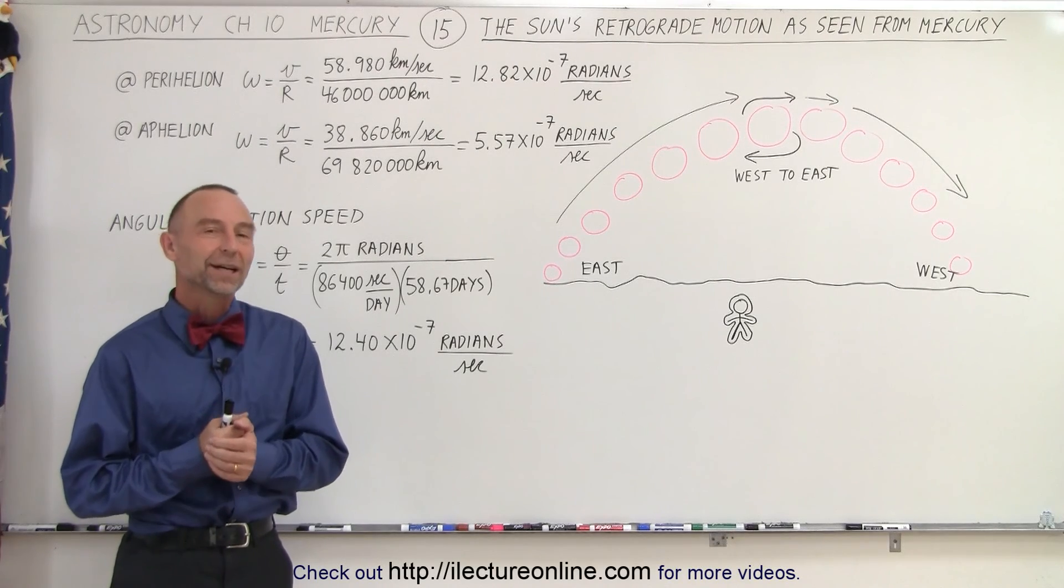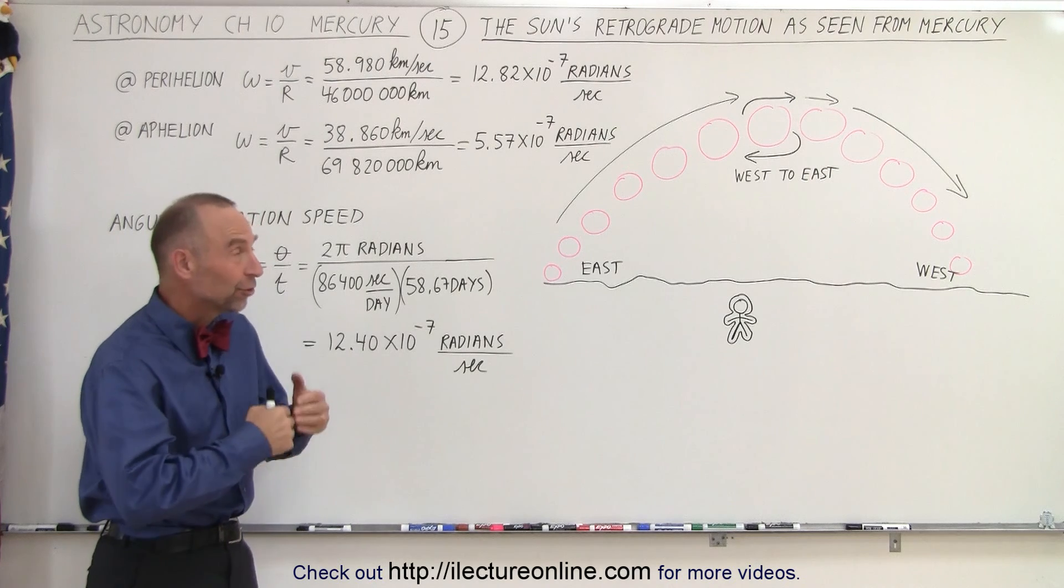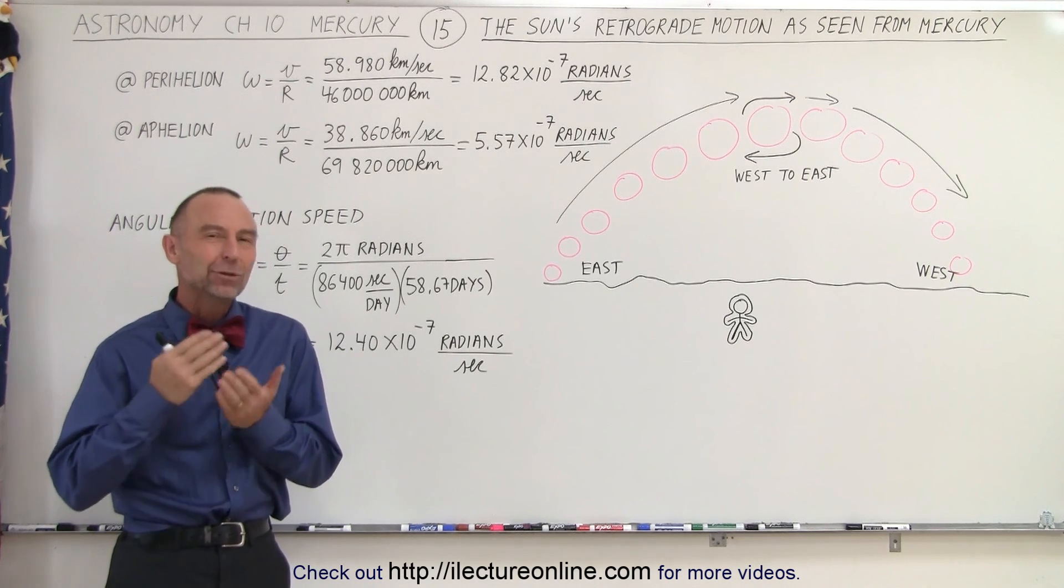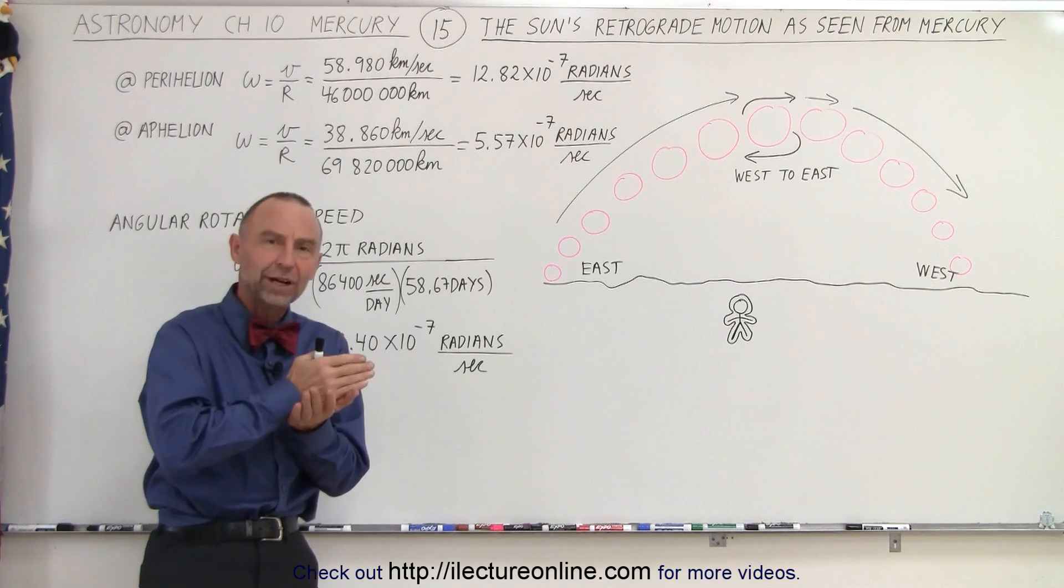Welcome to my lecture online. Another very interesting characteristic of the Sun's apparent motion on Mercury is that near high noon in certain circumstances, the Sun will actually travel in the opposite direction.